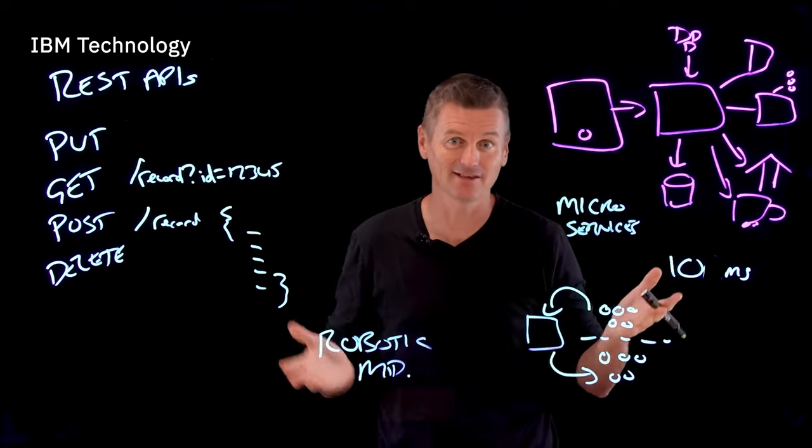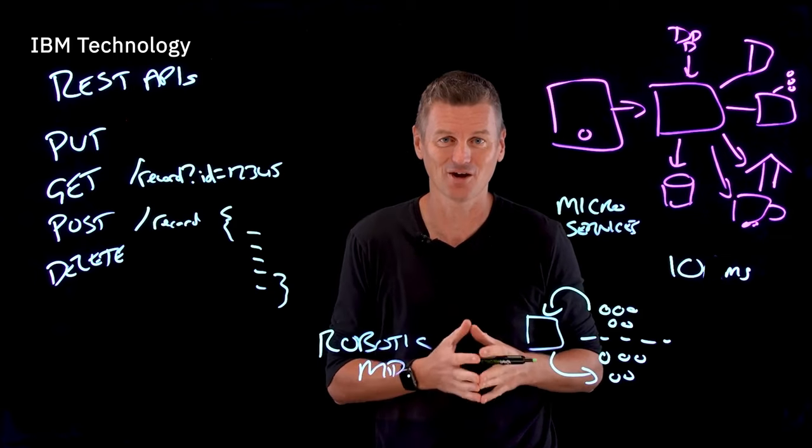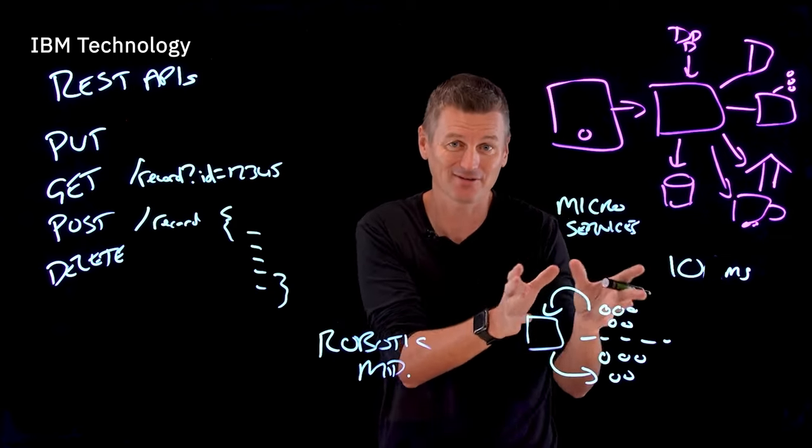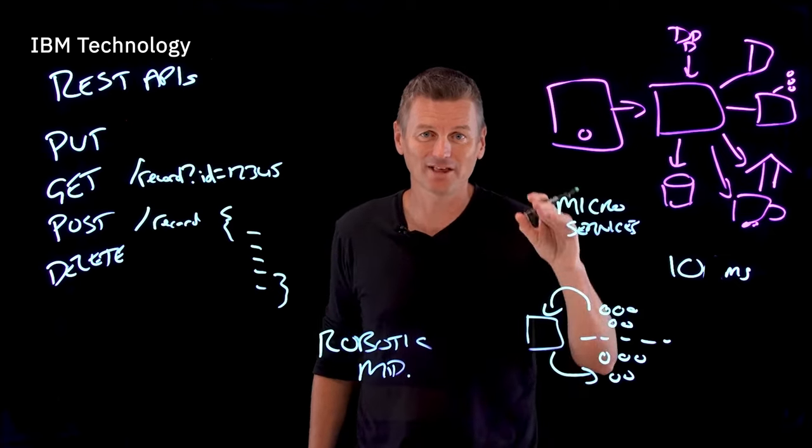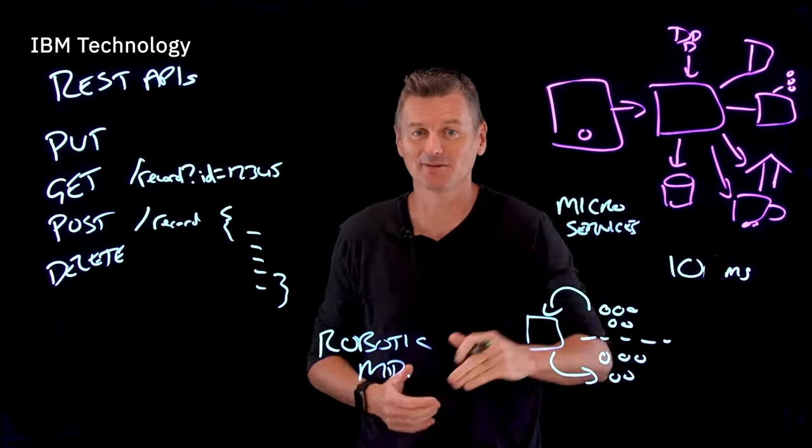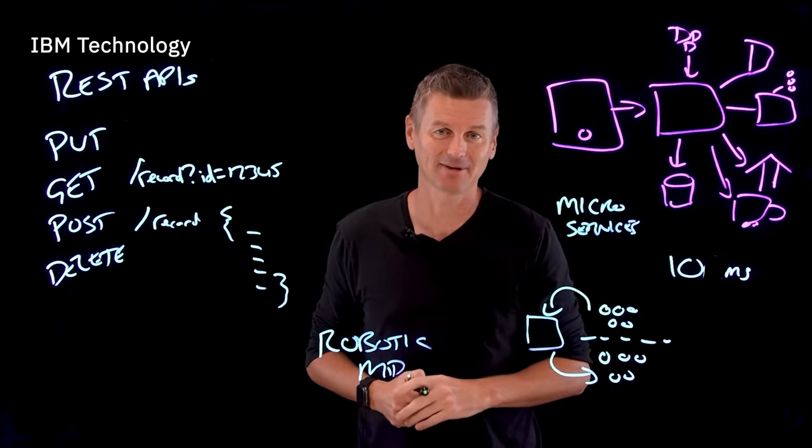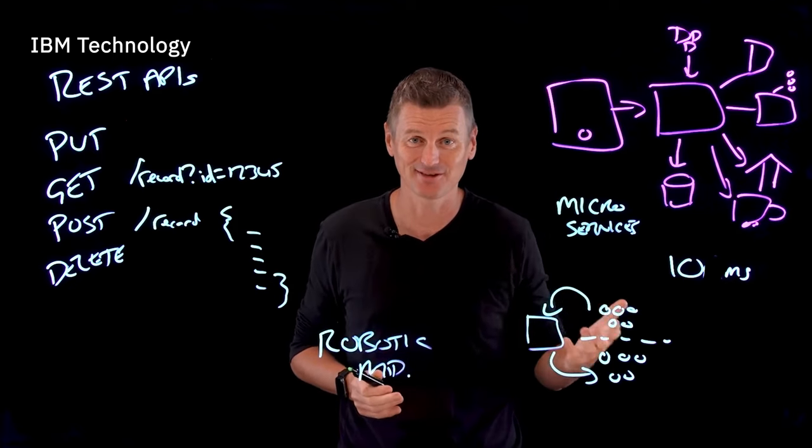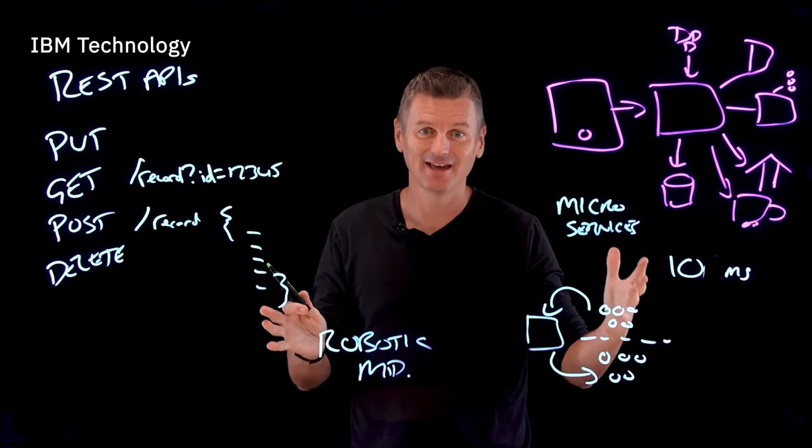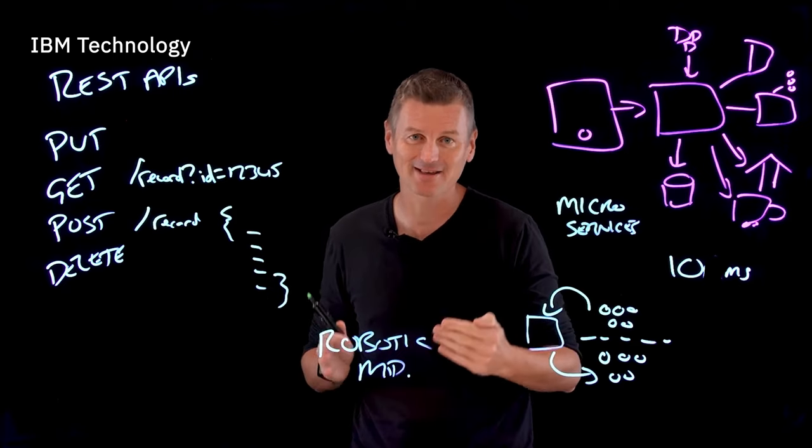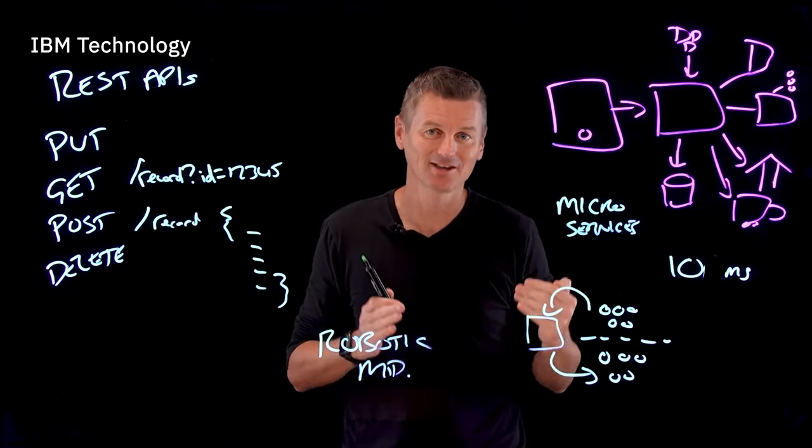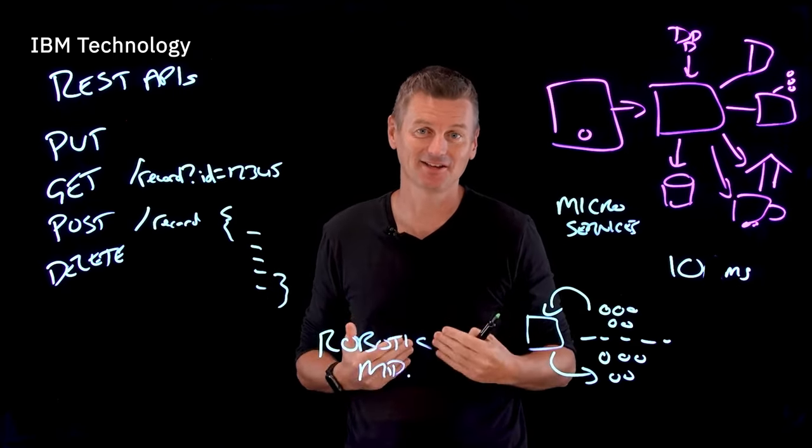And if you're thinking, great, so now we have a whole bunch of code to worry about related to microservices and keep track of. Well, that's one more reason that cloud automation plays a vital role in modernizing applications. Because in case you haven't noticed, the goal in all of this is to let the machines handle the complex, monotonous work so we can focus on what makes us unique.